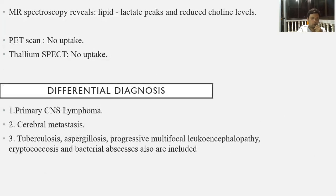MR spectroscopy reveals lipid-lactate peaks and reduced choline levels. PET scan and thallium SPECT show no uptake. The most important differential diagnosis for neurotoxoplasmosis is primary CNS lymphoma. Other important differential diagnoses include cerebral metastasis and other infective foci.